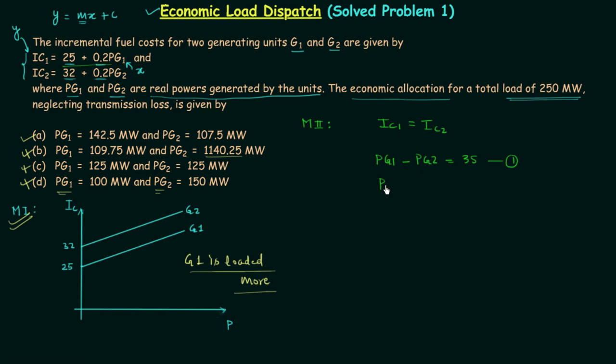And the other equation is PG1 plus PG2 is equal to 250 MW. This is the second equation. You can see we have two unknowns, PG1 and PG2, and we have two equations. So we can easily find out PG1 and PG2 by solving the two equations. So let's solve it.